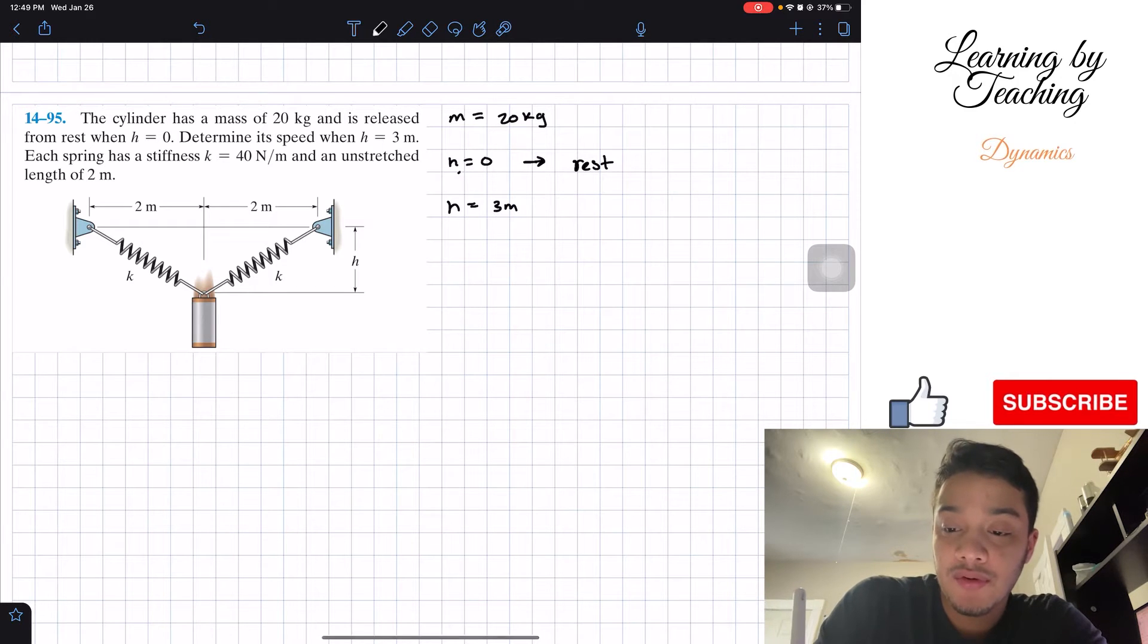Knowing that, I'm going to call my first h1 and then the second one h2. Those are the two points that we're going to be considering. We're given that the stiffness k of the springs is 40 newtons per meter, and it has an unstretched length L0 of two meters.